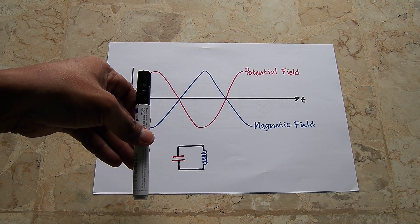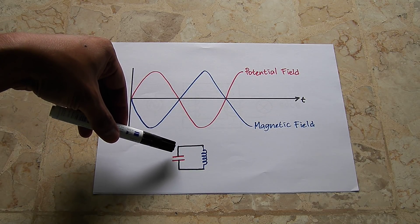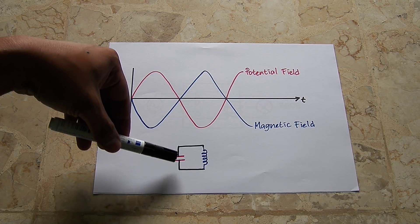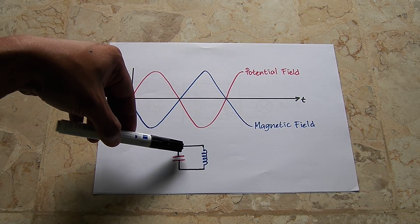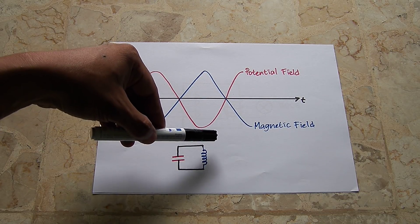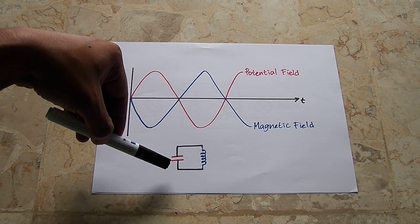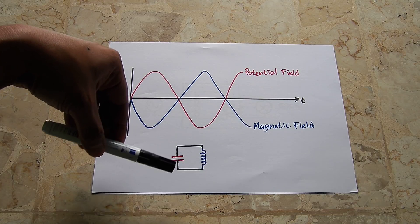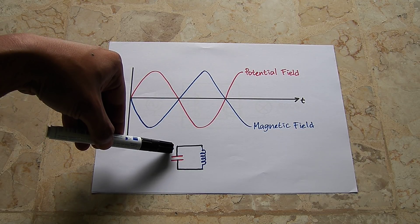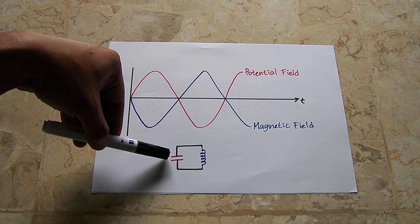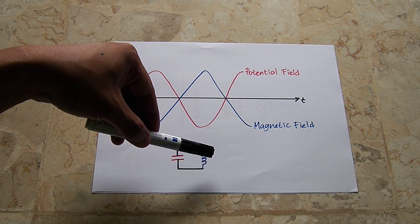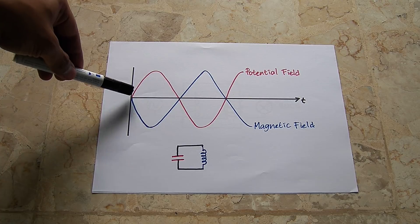The polarity is also alternating. If we have strong potential here with this side positive and this side negative, and then if there is no potential field, we will have north magnetic pole here and south magnetic pole here. Then again we will have strong potential field with inverse polarity — this side will be positive and this side will be negative. Then again, if there is no potential field, we will get a strong magnetic field with north and south reversed. Just like this graph.